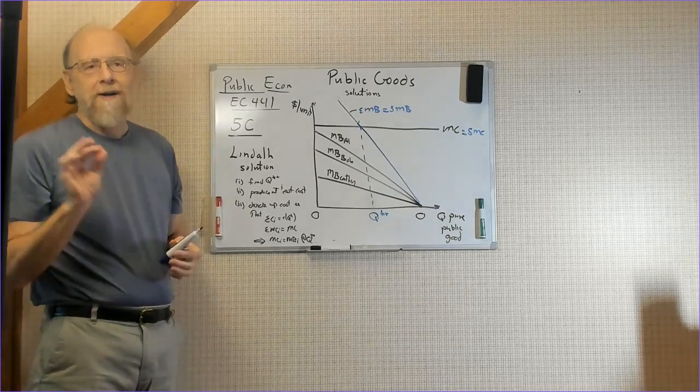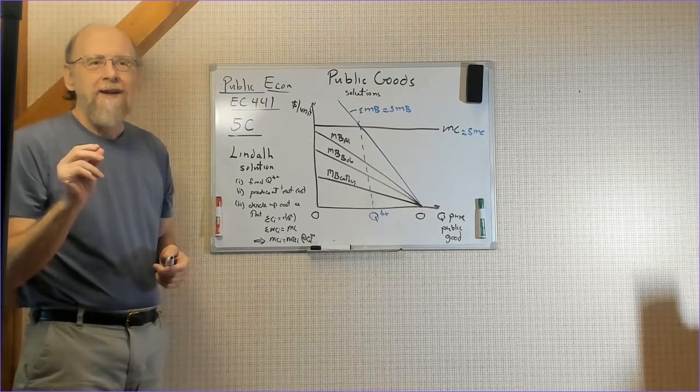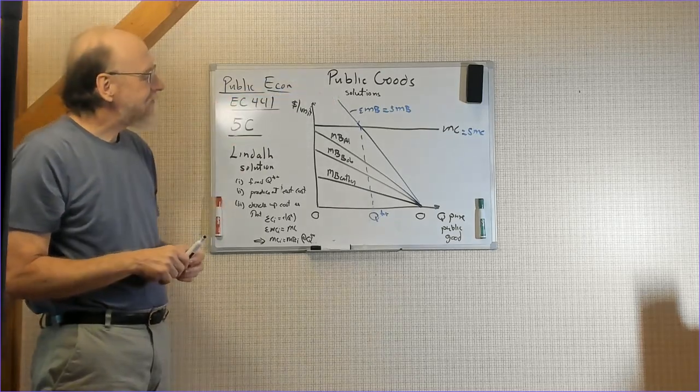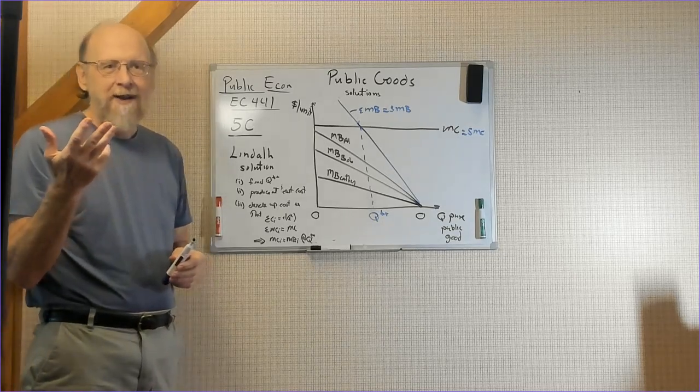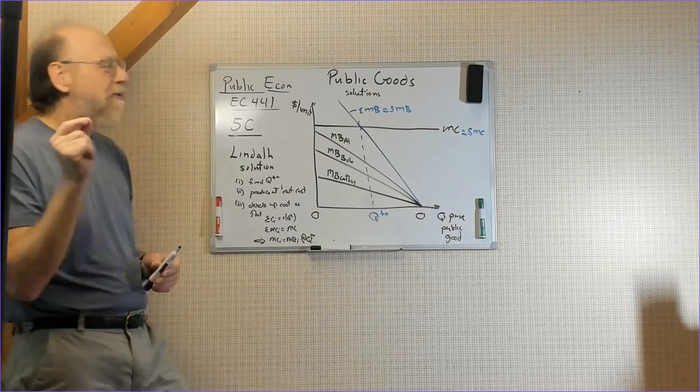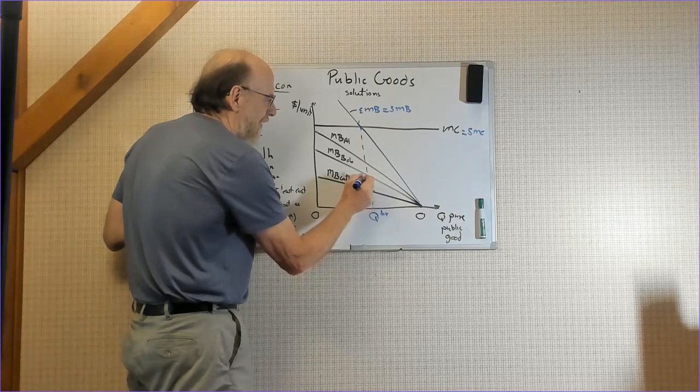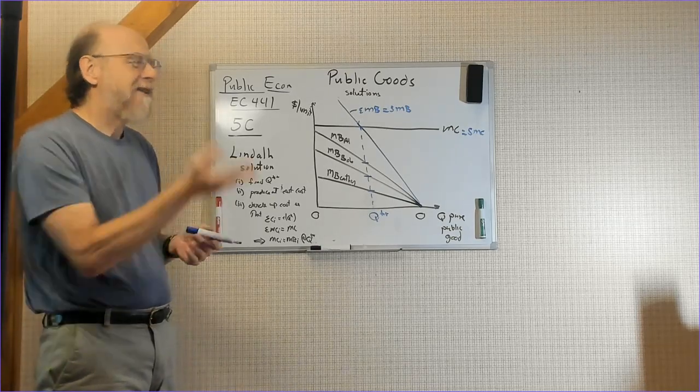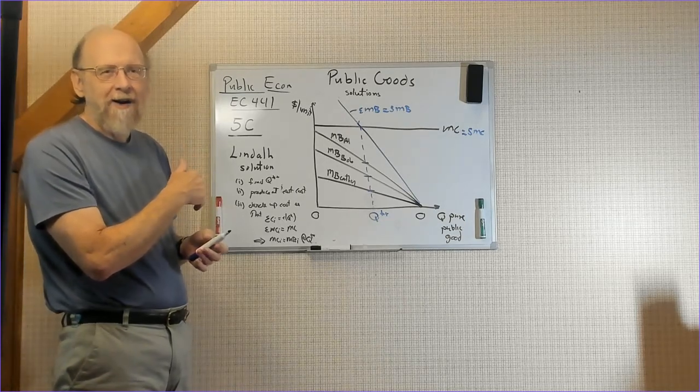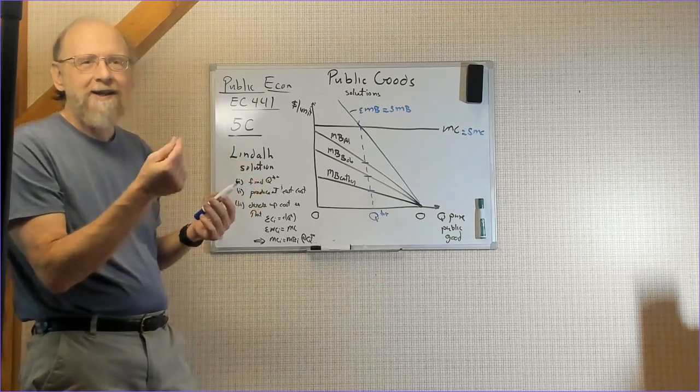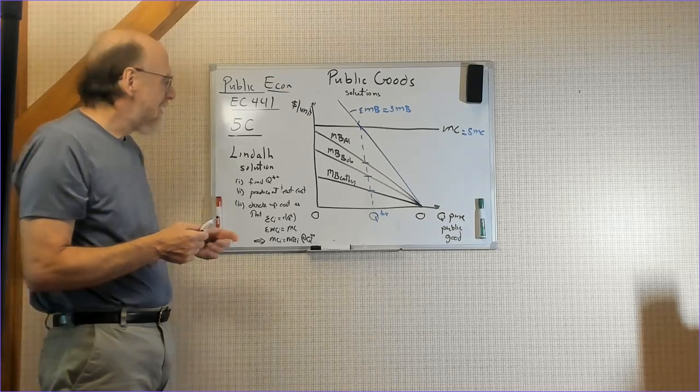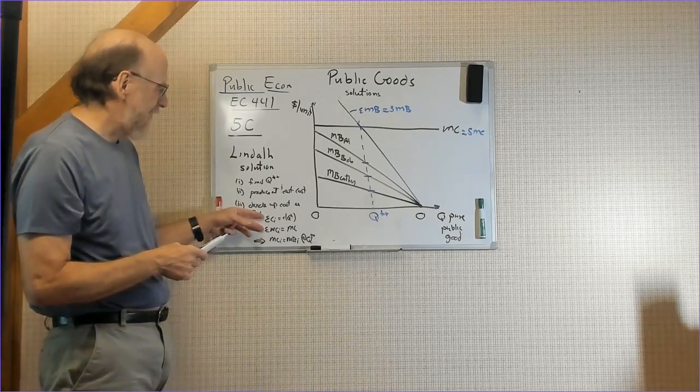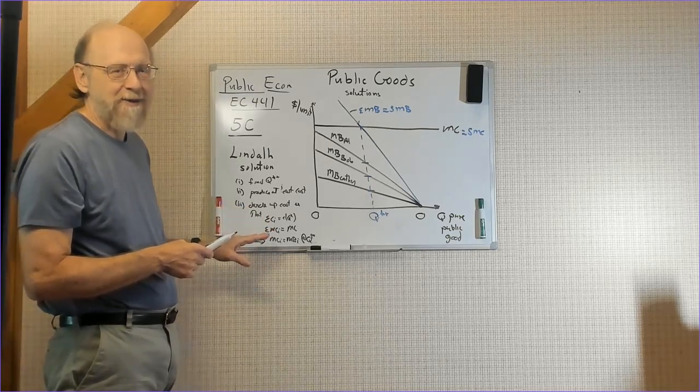We find the quantity where social net benefits are maximized or where consumer surplus is maximized. And we then divide up the costs so that each person pays a cost share equal to their marginal benefit at Q star star. The Lindahl tax turns out to be another special case of the Samuelsonian tax because it meets these other criteria plus another one. This is a special case of the Samuelsonian solution.